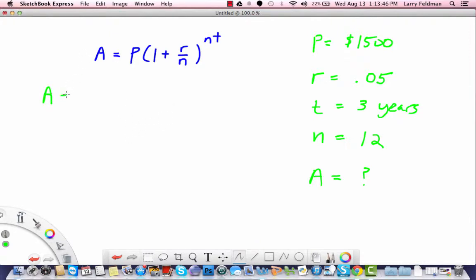How do we find A? We simply substitute in the values that we have. A equals 1,500 times 1 plus 0.05 over 12, all to the NT. So we have 12 times 3 up here. So let's simplify this a little bit more. We have $1,500 times 1 plus 0.05 divided by 12 to the 36th power.